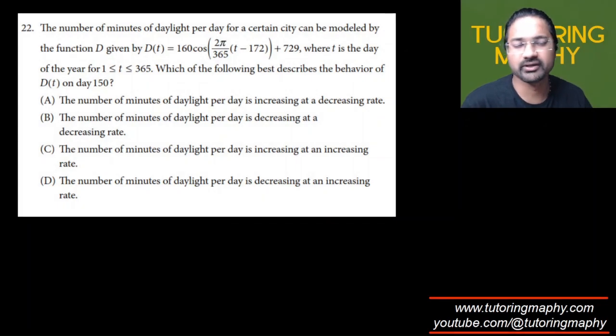The next question is number 22. It's based on trigonometry. It says that the number of minutes of daylight per day for a certain city can be modeled by this particular function, where t is the day of the year from 1 to 365.